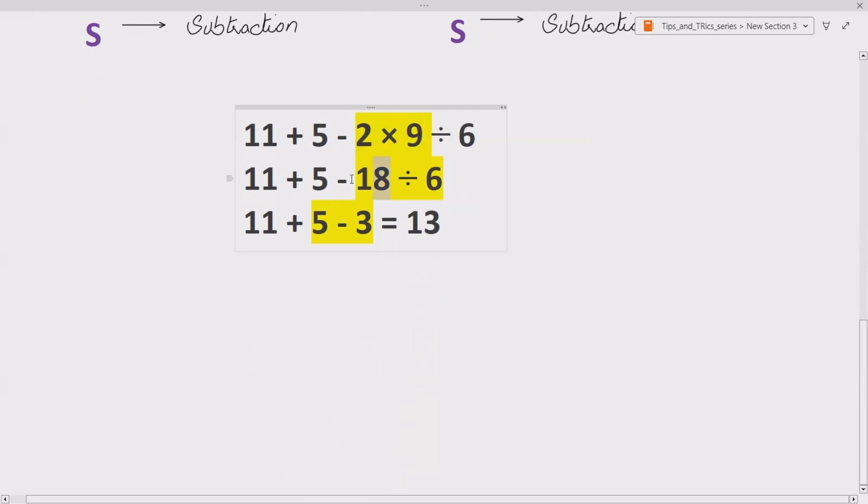Now according to BODMAS or PEMDAS, we have to do division: 18 ÷ 6 gives us 3. Now 5 - 3, or we can do alternatively 11 + 5 - both are correct. So we have got 13 when we solve this expression.